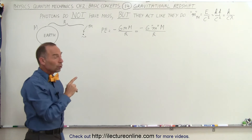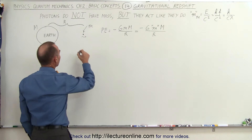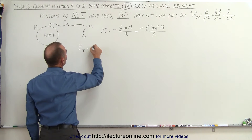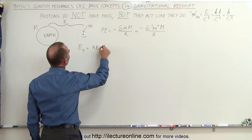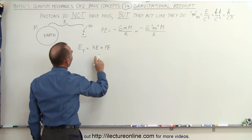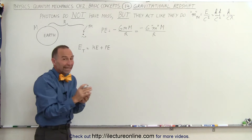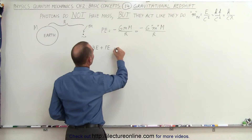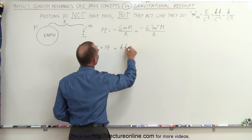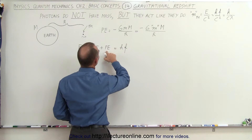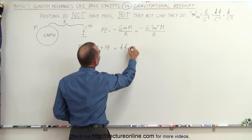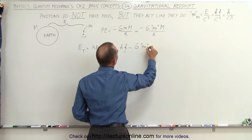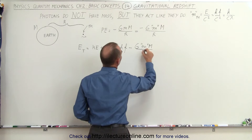We also know that the total energy of an object in space equals the kinetic energy plus the potential energy. For a photon, the kinetic energy — the energy it has when free in space — is equal to h times the frequency. And since the potential energy is negative, it would be minus G times the apparent mass of the photon times M over r.